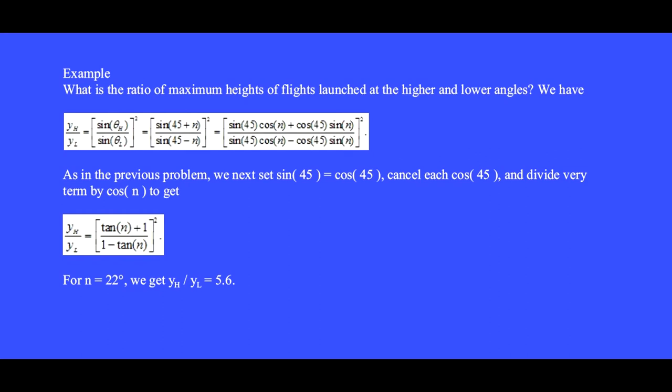What is the ratio of maximum heights of flights launched at the higher and lower angles? We found that the height goes as the sine of the launch angle squared. So we formed the ratio to cancel the common factors. We have the ratio of the maximum height when launched at the high angle y_h divided by the maximum height when launched at the low angle y_l equals sin(θ_h) over sin(θ_l) squared.